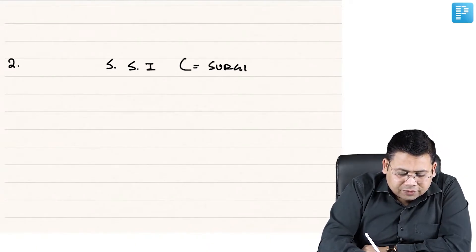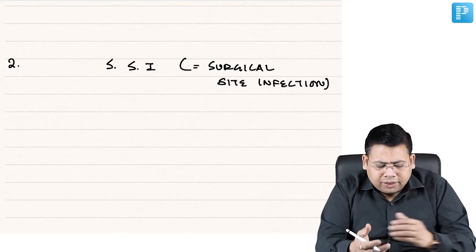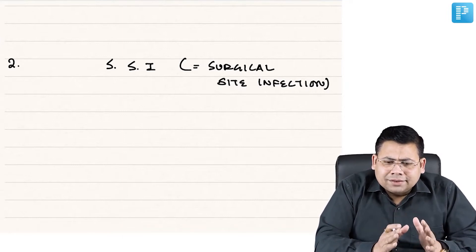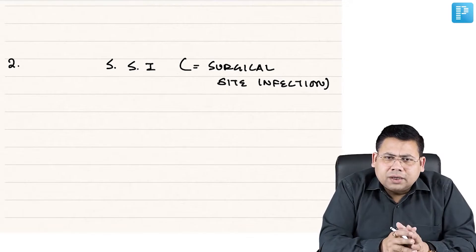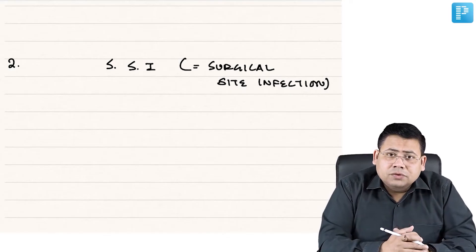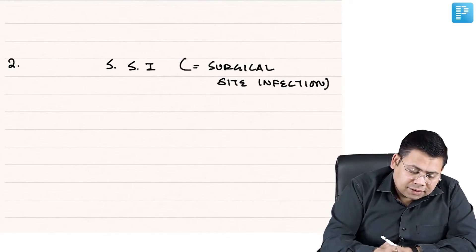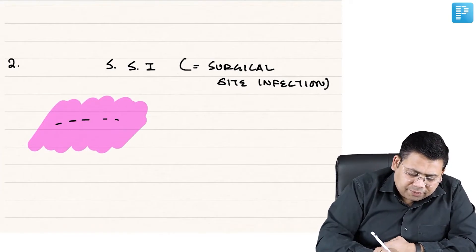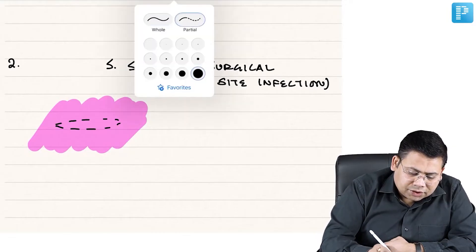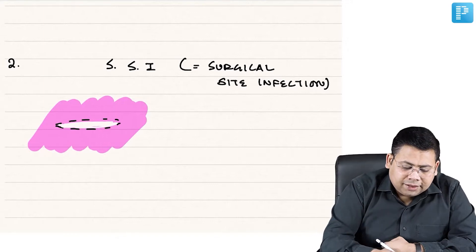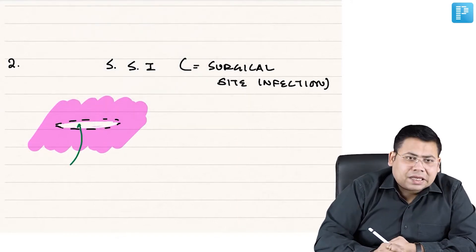SSI is defined as Surgical Site Infection. Consider this interesting question: do prophylactic antibiotic doses work? The answer is yes, they really do. Why? Because when you make an incision, you have opened up the skin.